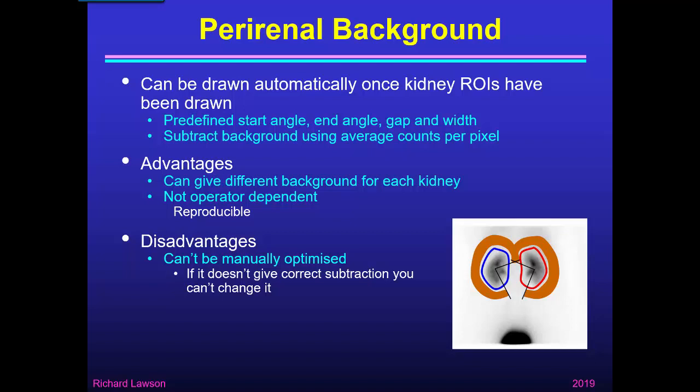However, that is also a disadvantage, because it means it can't be manually optimised. If the background-subtracted curve doesn't satisfy the criteria of rising from zero, and you repeat it, you'll get exactly the same answer because nothing changes. So it can be reproducible, but it may be reproducibly incorrect.